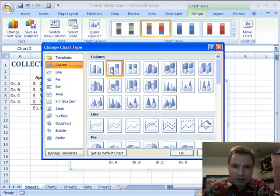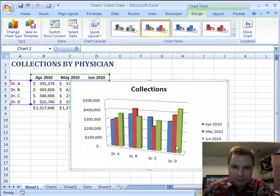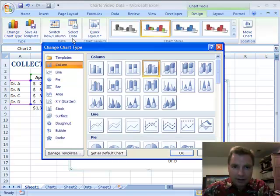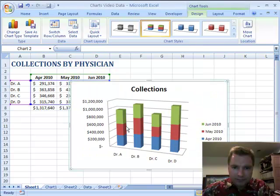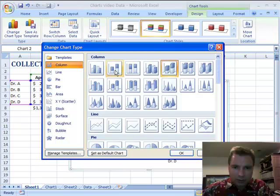These other options are, this is a 3D clustered column and you can do the same thing with a 3D stacked column. It's just a different presentation of what we had over here with the clustered column and stacked column.